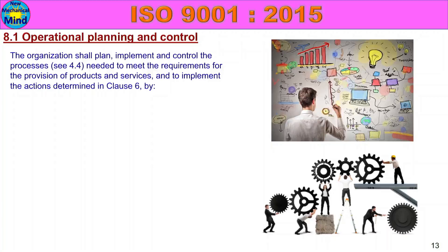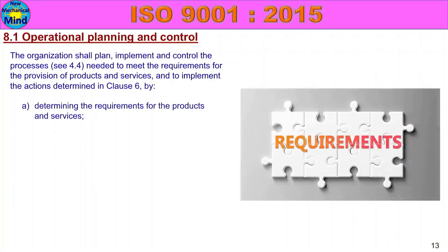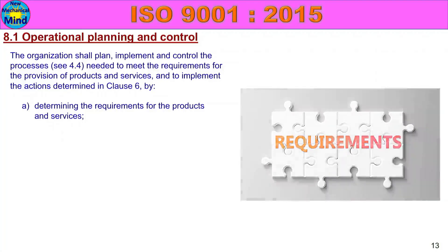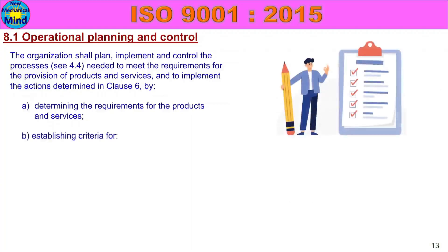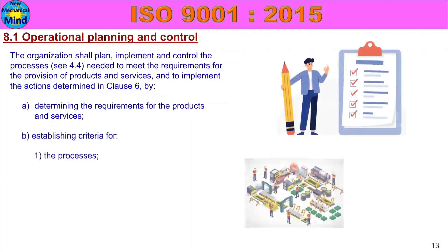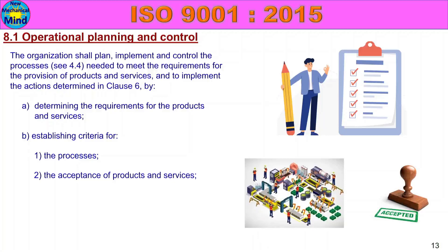If you do anything, consider what to do: determining the requirements for the products and services. All products or services must consider what needs to be done. Next, establishing criteria for the processes and the acceptance of products and services. If you run a process and produce products or services, you need to list the criteria.